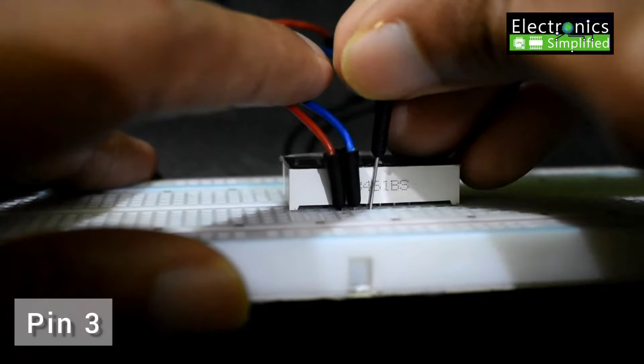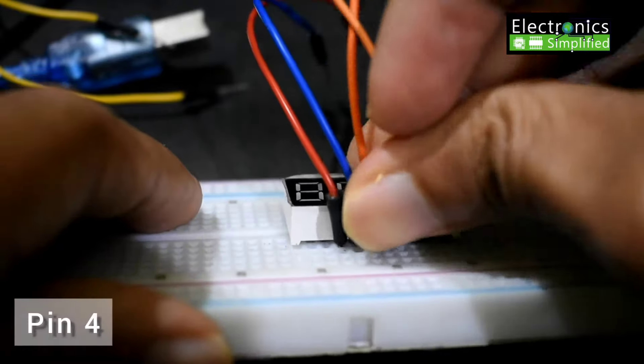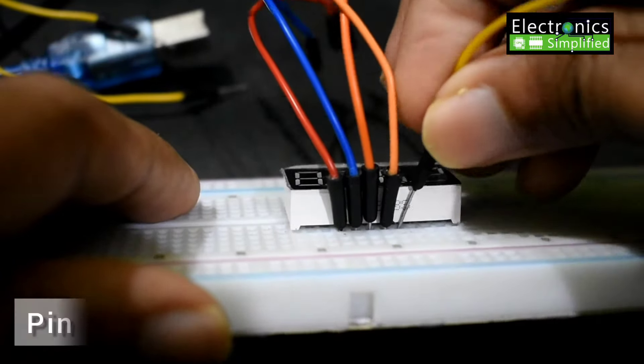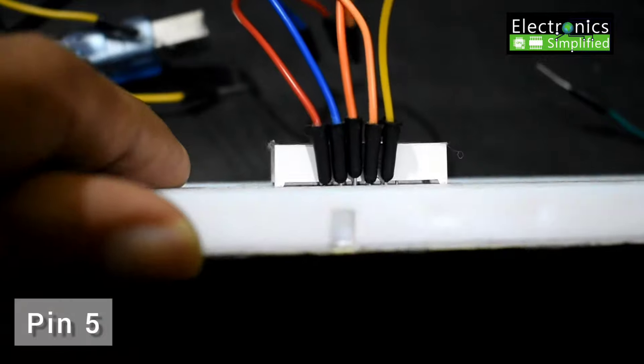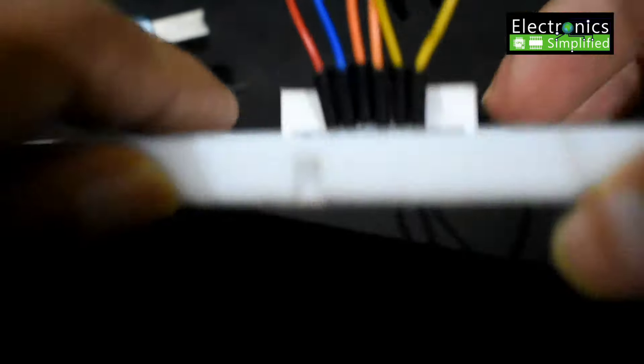So pin 3, pin 4, pin 5 and pin 6. So I have 6 pins right down on my display, bottom side of the display. Now comes the other side.